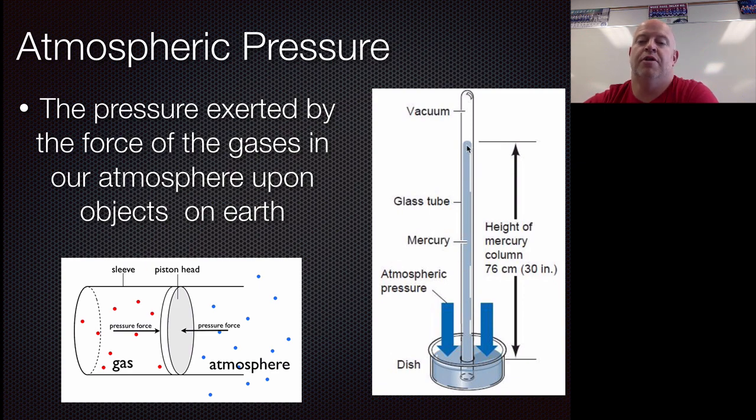Now, mercury has mass to it also. So the farther you push this up, the harder it would be to do that. So this column will rise in comparison to how much pressure is pushing down on it. That height that we measure is called the millimeters of mercury. So that's where that measurement comes from.